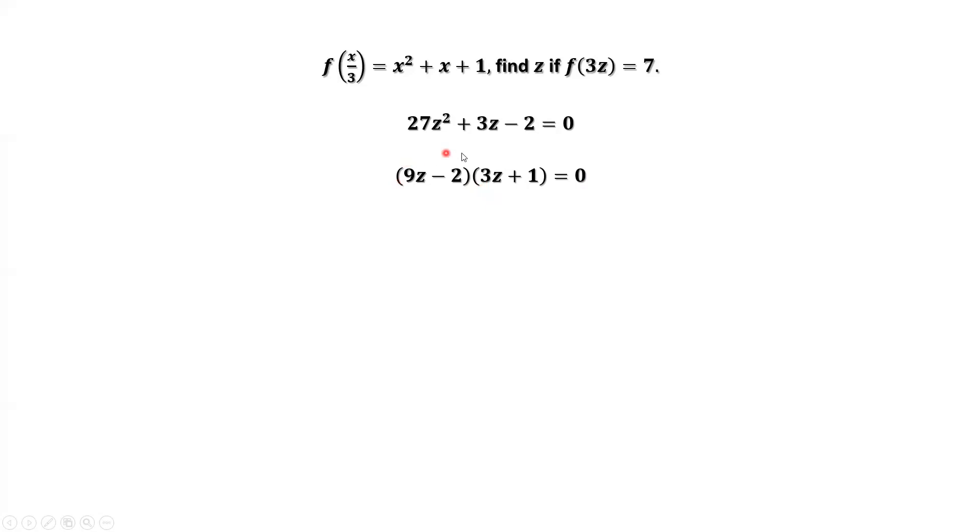From the first factor, if it is 0, this implies z equals 2 over 9. And if the second factor equals 0, we have z equals negative 1 over 3.